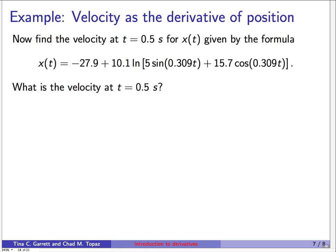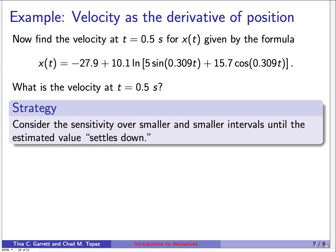Now let's do the same problem yet another way. Imagine that instead of a table or graph, you're given a formula: for any time t, you can plug in and find the position of the ball. We'd like to estimate the velocity at 0.5 seconds. The strategy is to consider sensitivity — estimate the derivative over smaller and smaller intervals containing our point of 0.5 seconds — until the estimated value settles down.